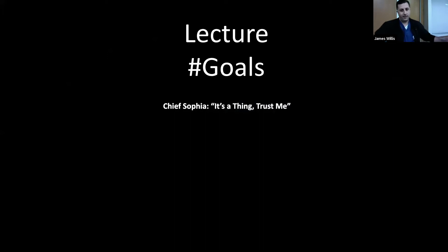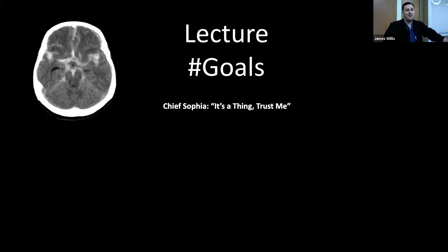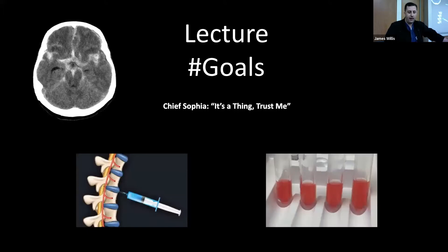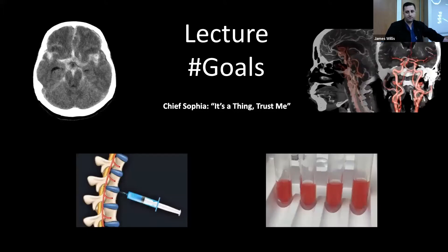Quickly, the lecture goals. Sophia told me I have to put the hashtag because it's a thing. I want to talk about the utility of a non-con CT head. That's your classic starfish pattern of a subarachnoid hemorrhage there. When is LP going to be your next step? How to interpret the LP results? And when is CT angio an option on the table?